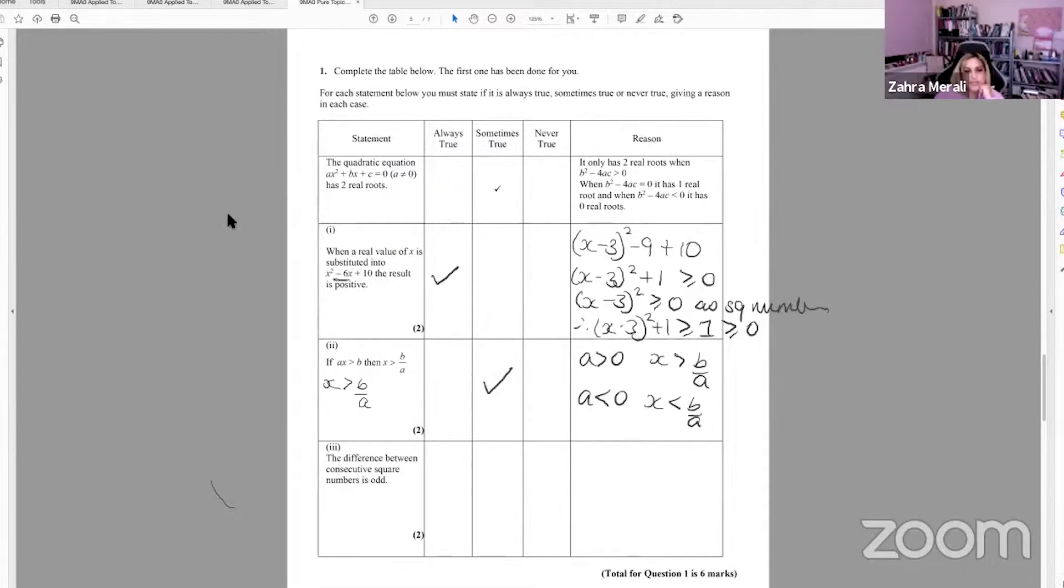The difference between consecutive square numbers is odd. Okay, so let's take a number n squared, and the next one along, okay, so n, the next one along would be n plus one. We want the difference between them. So we'll get n squared plus 2n plus 1 minus n squared, which is 2n plus 1. And that's always going to be odd because it's an even one plus one. So therefore, this is always true. So you'll have even plus one equals odd. Okay, that was a bit of a strange question.